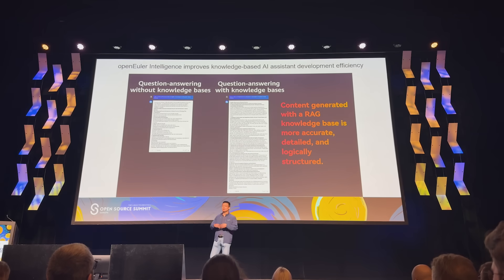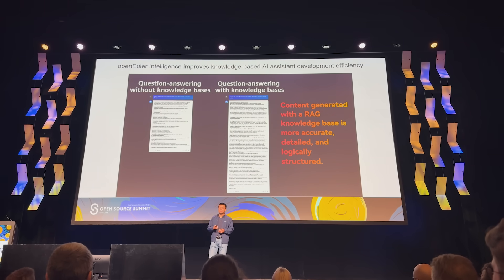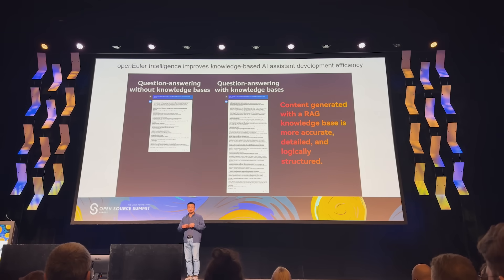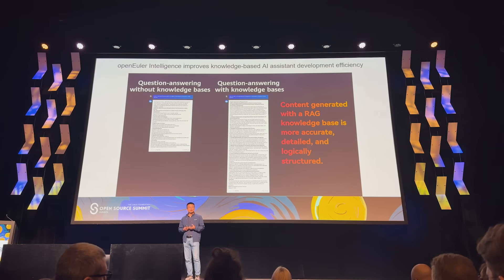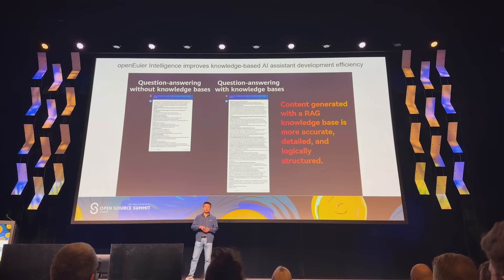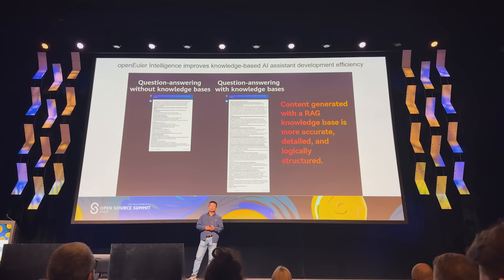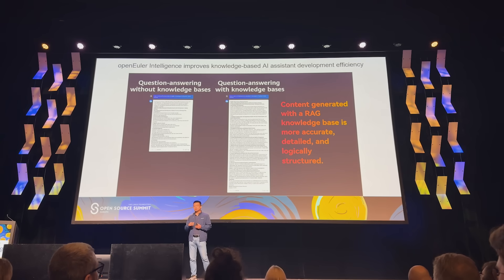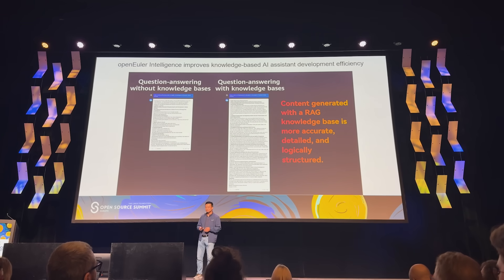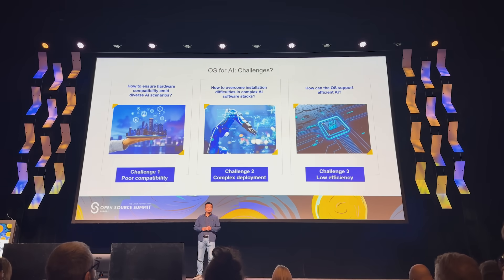For example, an on-premises system. On the left is a question-answering system without a private knowledge base, and on the right is what happens after we use OpenEuler Intelligence to put your private data into the system and do training — you get a very good, accurate answer. The advantage is you can use a simple drag-and-drop interface to do the job, so it's very easy to use. That is the AI for OS direction.